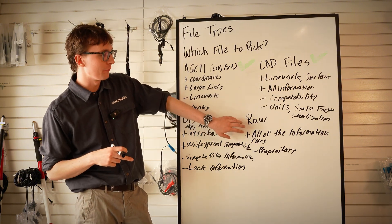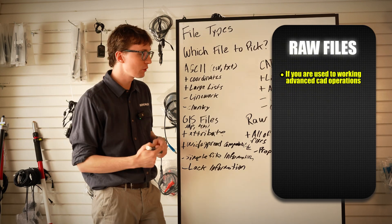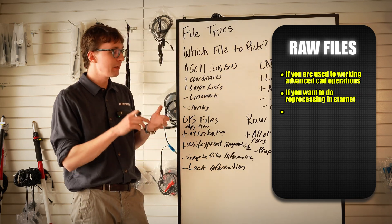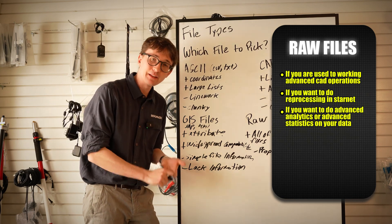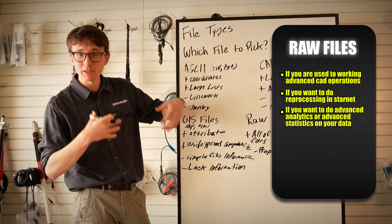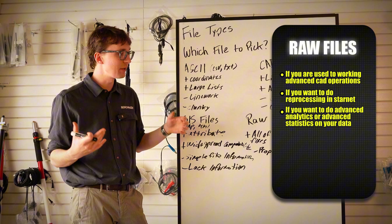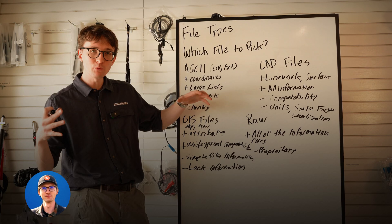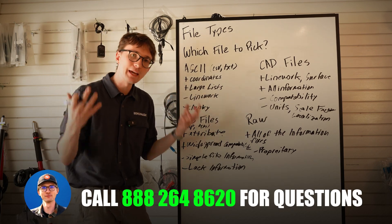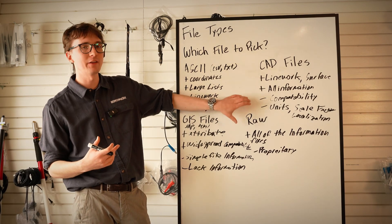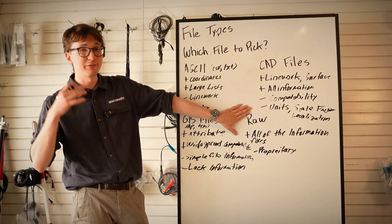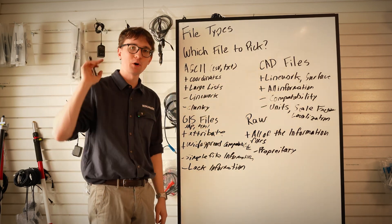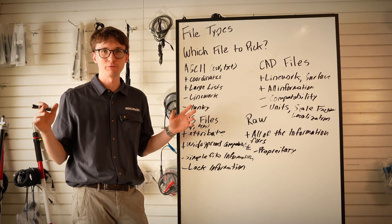For RAW files — these are for users accustomed to advanced CAD operations, those who want to do reprocessing in Starnet or need advanced analytics and statistics on their data. It can be a very complex file type requiring expertise. If you need help getting that advanced data out, reach out to us — we have software packages like MSCAD and Starnet specifically designed to handle this. But for 95 to 99% of you, ASCII and CAD files will be perfect and you'll never need to go further than that.